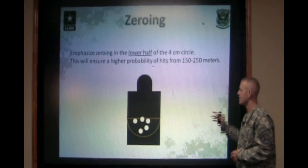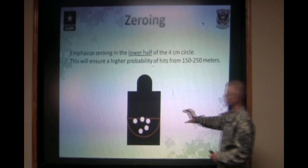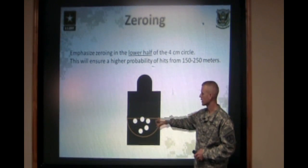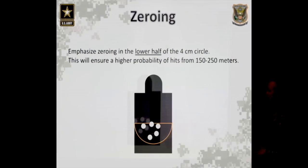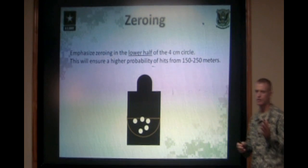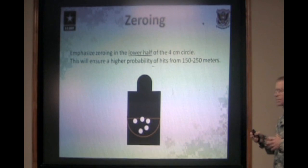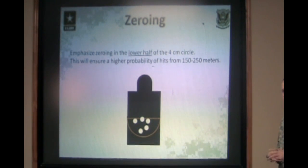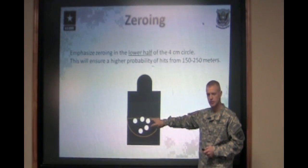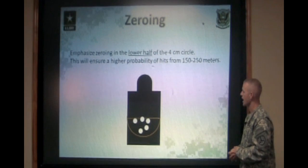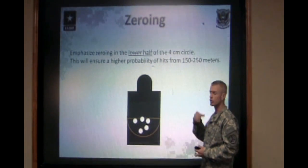When zeroing at 25 meters, we emphasize shooting five-shot groups and zeroing low in the four-centimeter circle on the center of the target. Zeroing low in that circle ensures that on those mid-range targets from 150 out to 200 meters, the shooter is not going to shoot over the shoulders of the target — those are the targets most commonly missed on the pop-up qualification range. By zeroing a little bit low in the four-centimeter circle, you're still achieving a good solid zero on the rifle, and it's going to keep your point of impact at the mid-range targets in the high chest, not over the shoulders.